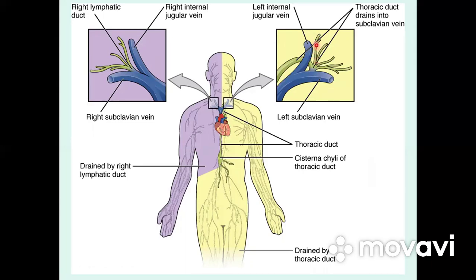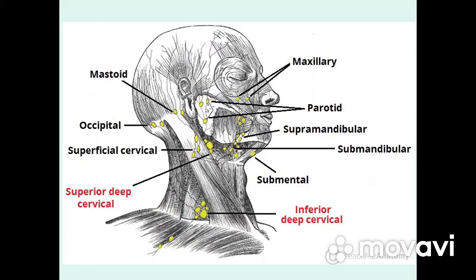Lymph from the head runs into the nodes on the boundary between the head and neck. These include: occipital lymphatic nodes, mastoid, parotid, maxillary, supramandibular, submandibular, and submental nodes. The parotid nodes are divided into deep and superficial lymphatic nodes.